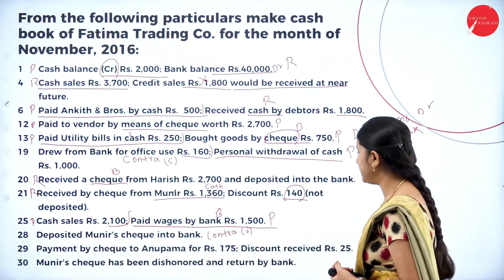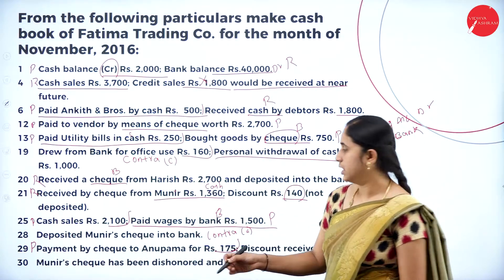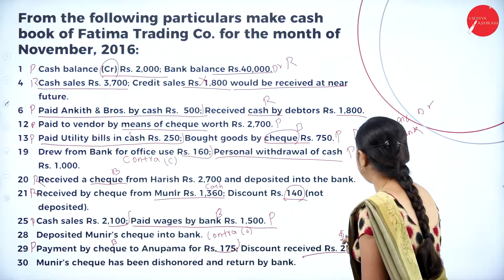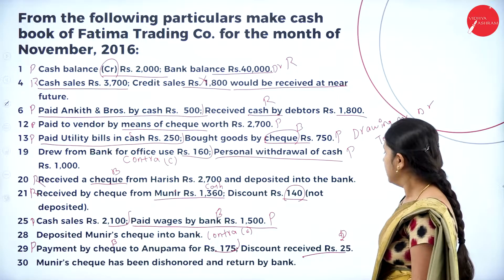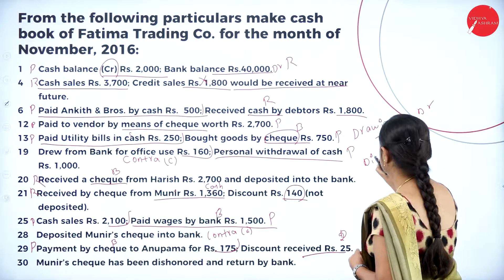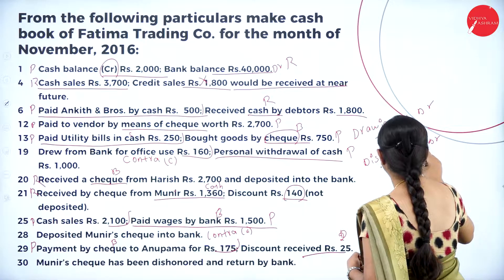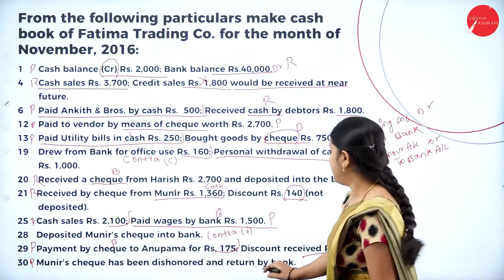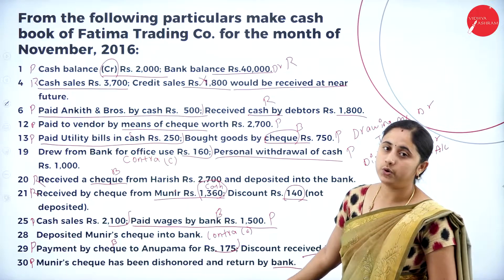Next, payment by cheque to Anupama for rupees 175, discount received 25. Payment side — by Anupama account, bank column 175 and discount column 25. Finally, November 30th: Munir's cheque has been dishonored and returned by bank. Entry: dishonored account debit to bank account. Bank is credited, so write on the payment (credit) side — by dishonored account, amount in bank column, rupees 1360.